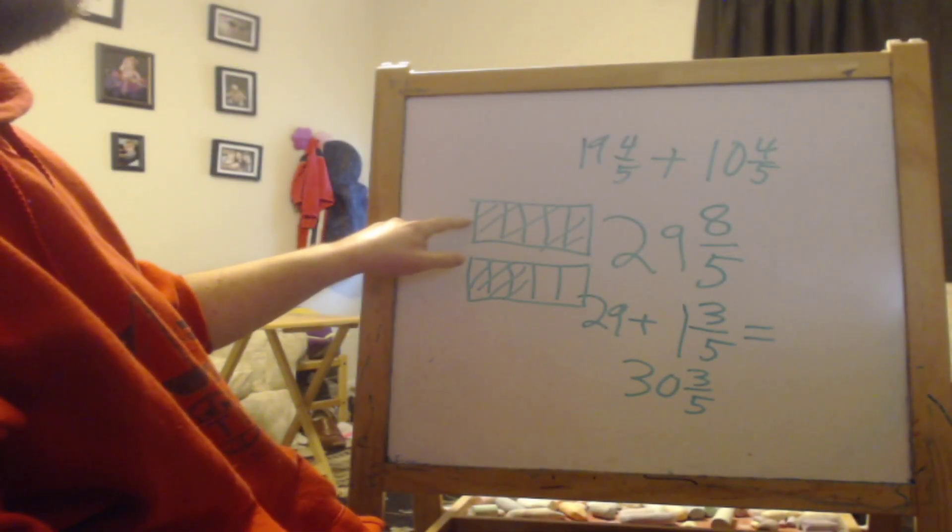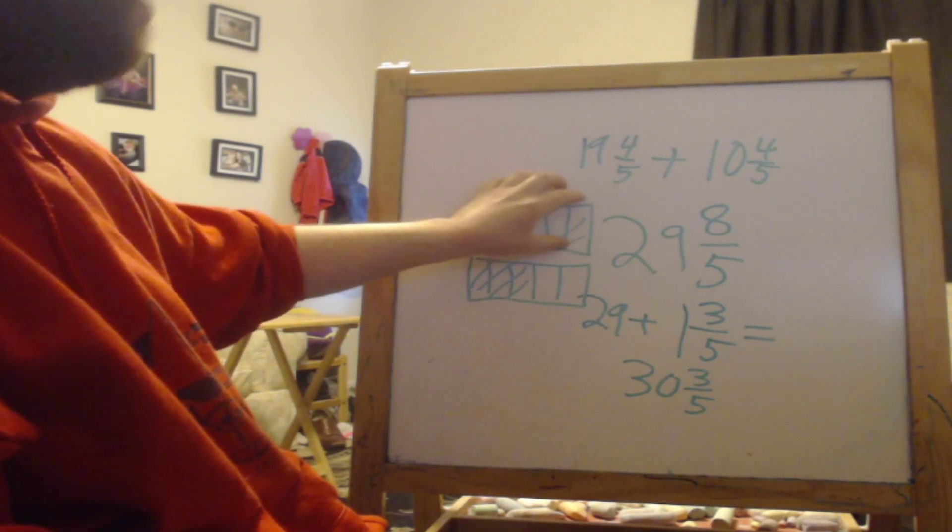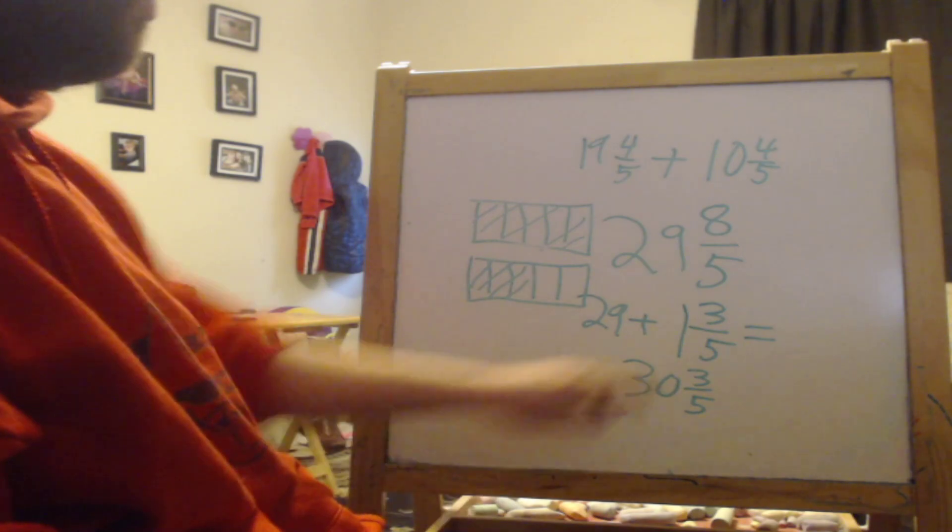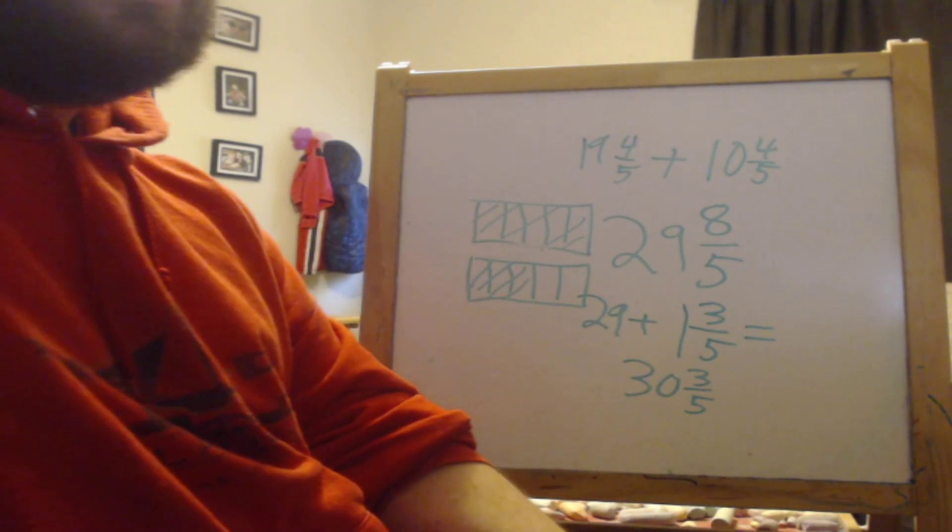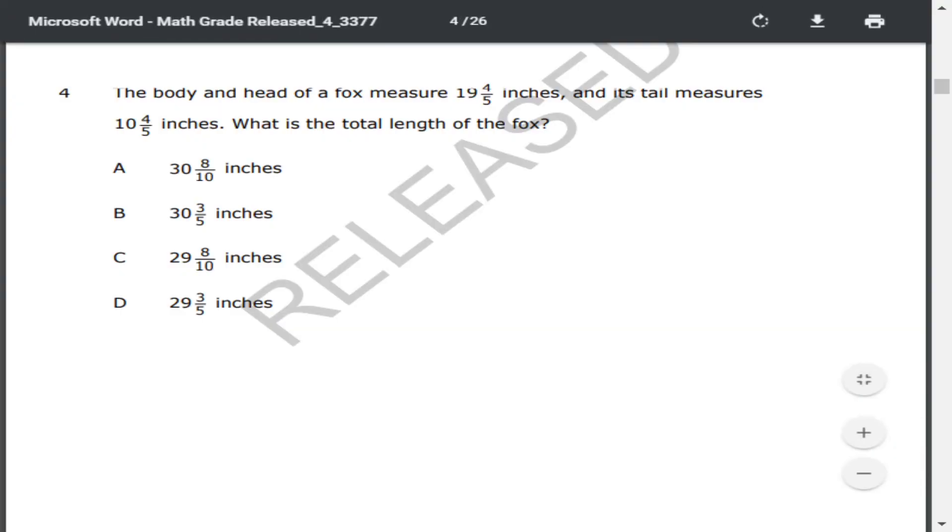Because 8/5 would be one whole of 5/5 and then three more. So the answer would be 30 and 3/5, which is B.